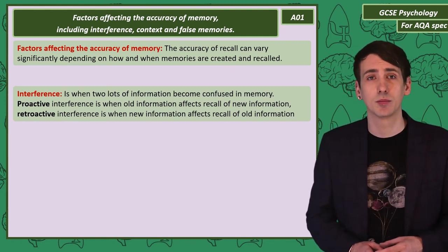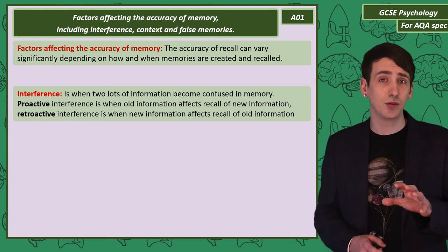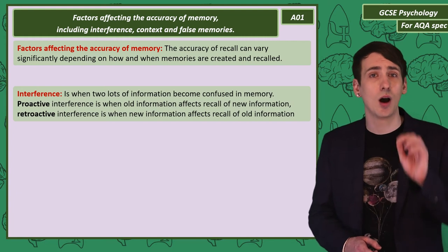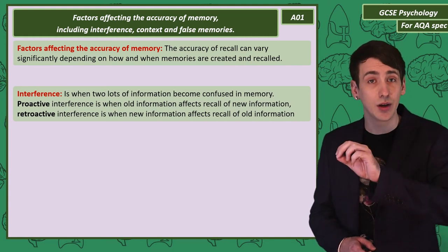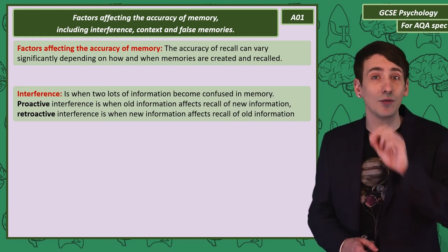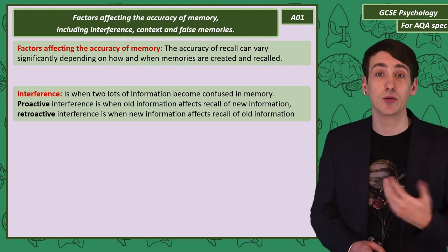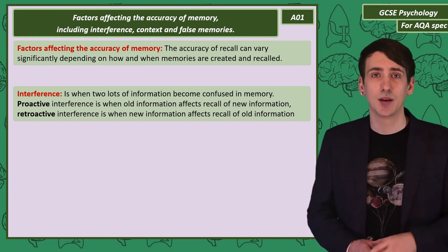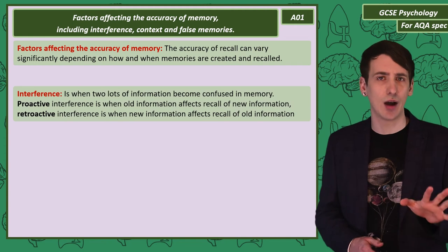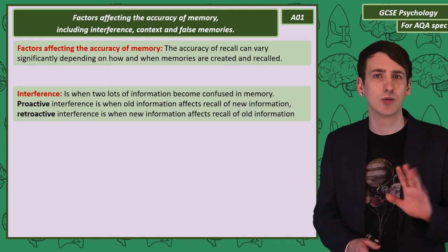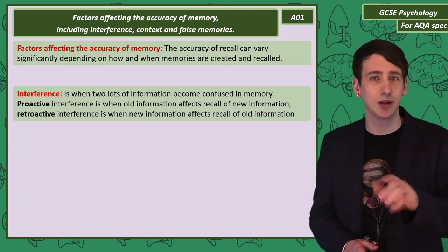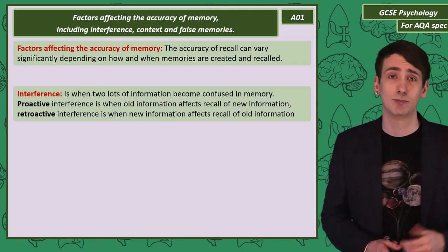Proactive interference is when old information influences the recall of new information. For example, if you move house and you give your old postcode instead of your new one.